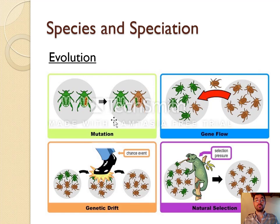To summarize: mutations are random changes in DNA; gene flow is immigration or emigration; genetic drift is random events; and natural selection is the big one — the one we will really be talking about. Of these four processes, the only two you are required to know are mutation and natural selection, but it's good to know the other two exist as well.